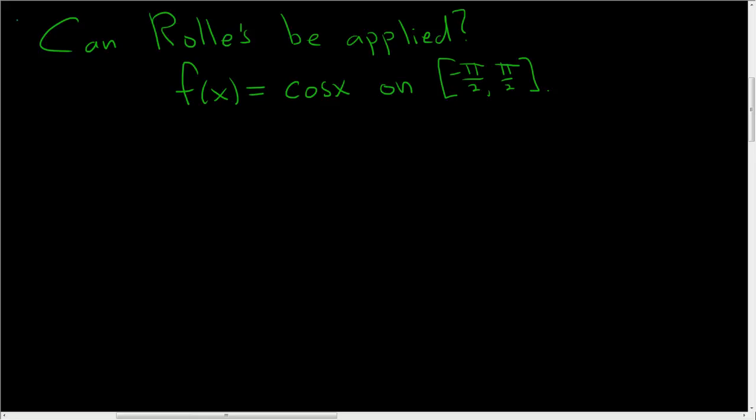It's asking if Rolle's theorem can be applied to the function cosine x on the closed interval from negative pi over 2 to pi over 2. So in this problem, the answer is yes.